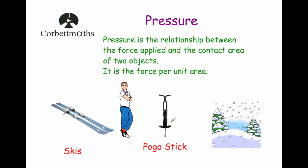If this man was to go out and walk in the snow, it would be much more suitable for him to wear skis than to go on a pogo stick. Whenever he stands on the skis, his weight — the downward force — is spread out over a larger area. In other words, there's less pressure on the snow, so he doesn't sink down as far.